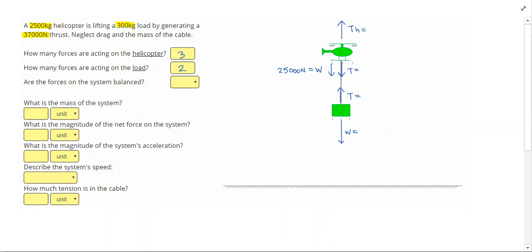On the load, we have 300 kg. Multiplying that by 10, we get 3,000 N. The problem also says that the thrust is 37,000 N.